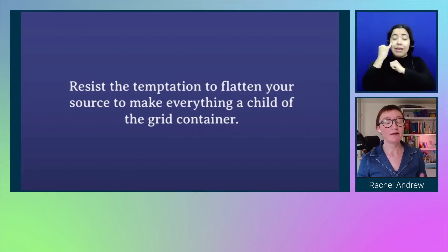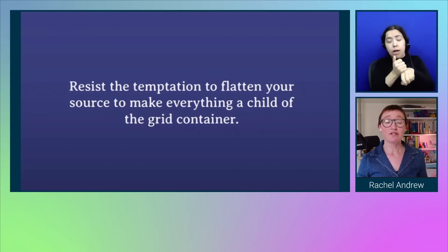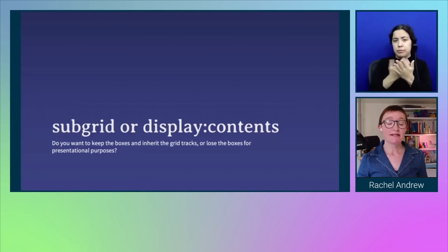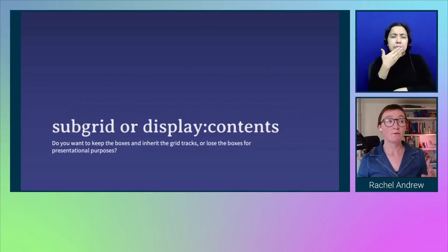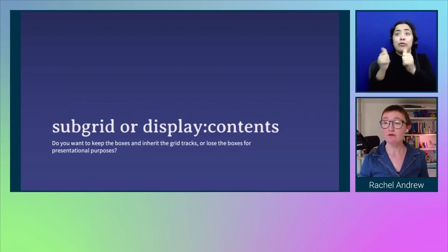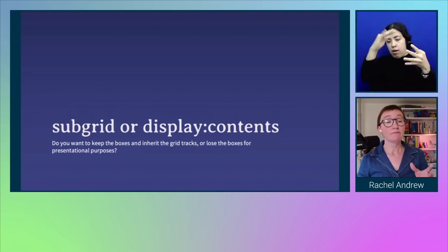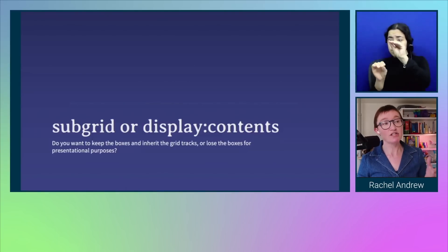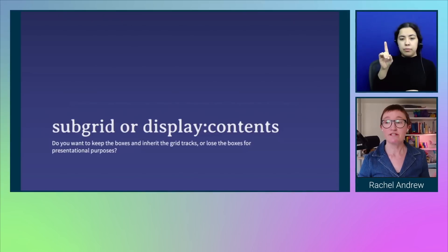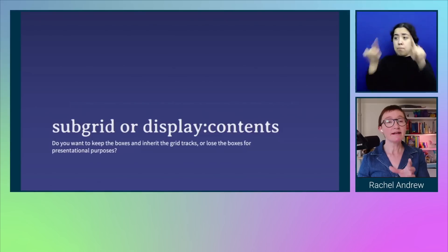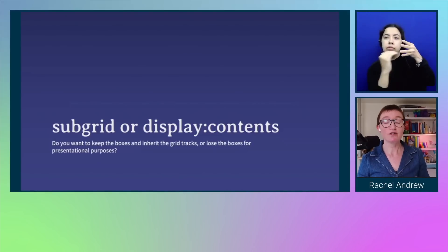The fact that display:grid or display:flex only makes direct children into flex or grid items makes it tempting sometimes to achieve layouts by just removing semantic markup. So: do we really need to make this a list, or could we just have a bunch of divs that are easy to position? Resist that temptation. If something's a list, make it a list, and then worry about how to deal with it. Semantic structures like lists are really important for people to understand what your content is. We've got a couple of ways to deal with semantic boxes — which you choose depends on how you want your layout to behave.